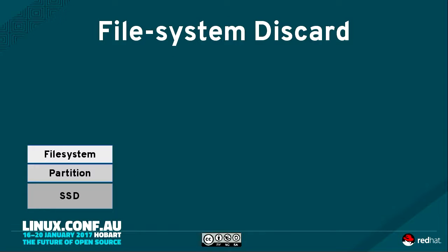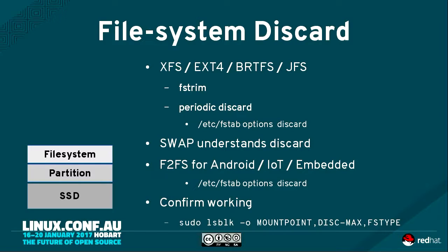Simple example: you're using an SSD with a file system. Most modern file systems support discard. You can use a tool like FSTrim to run it manually, or there's a scheduled job, or you may enable it periodically by turning on discard in your fstab. Swap just works. If you're playing with embedded devices, Android, or IoT-type devices using things like F2FS, it takes care of trim automatically — I got a huge performance boost on my tablet by moving key file systems to F2FS. To confirm it's working, use LSBLK with some options and you'll see if trim is effectively working. All this content will be available afterwards.